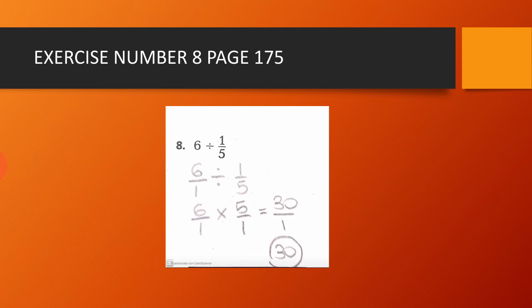Exercise number 8, page 175. We have 6 divided by 1 over 5. We write the 6 as a fraction: 6 over 1 divided by 1 over 5. We use the rule: keep, change, flip. So 6 over 1 times 5 over 1. 6 times 5 equals 30, and 1 times 1 equals 1. So 30 over 1 is equal to 30. The result of the division is equal to 30.